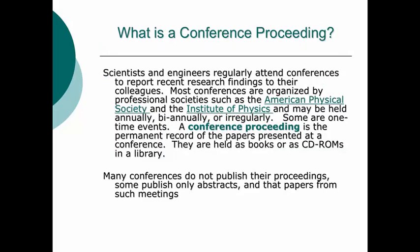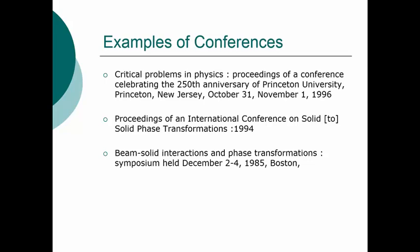What is a conference proceeding? A conference proceeding is a very important source of original research. Scientists and engineers of all disciplines go to conferences to report their research findings. Professional societies such as the American Physical Society and the Institute of Physics have conferences. It might be annual, biannual, or irregular. A scientist will stand in front of an audience and present his research findings. But a conference proceedings is a permanent record of what went on there. Here's an example of some conference proceedings in physics. Critical problems in physics held at Princeton in 1996. Those are examples of conferences which are books in the library which have original research.